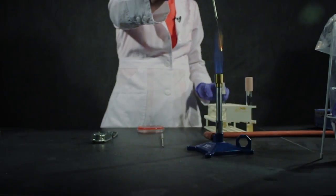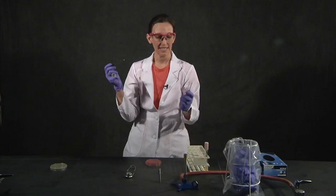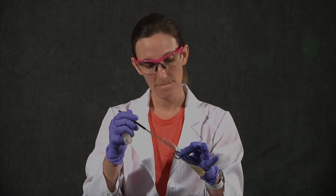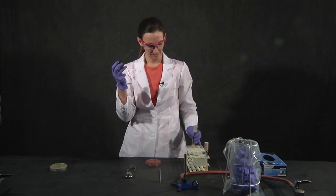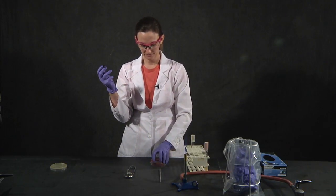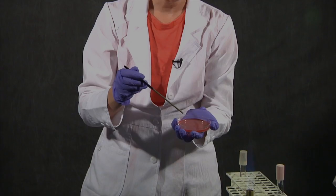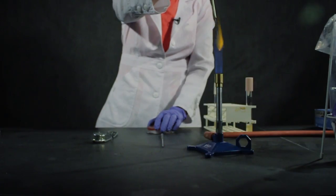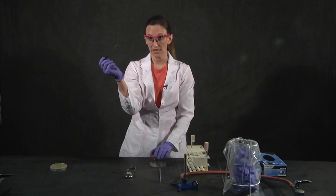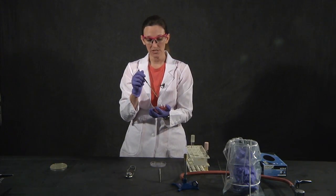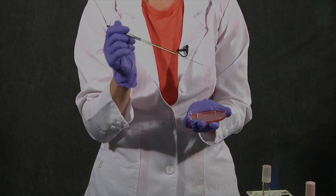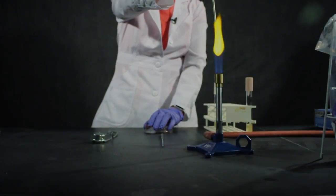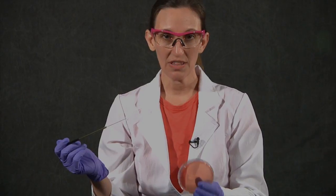I'm going to sterilize my loop and take the sample from the working stock. Place a little bit of the inoculum there, and then make sure you are streaking for isolation by reducing the number of organisms overlapping — streaking. You're going to incubate the MacConkey plate for 24 hours at your optimal growth temperature.